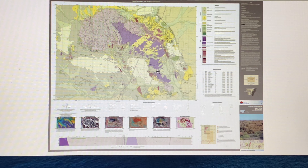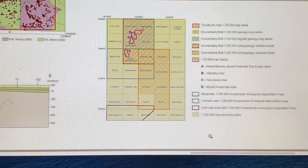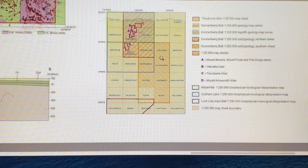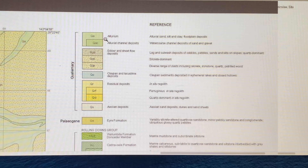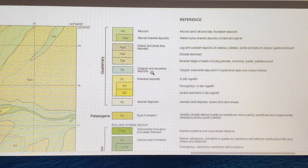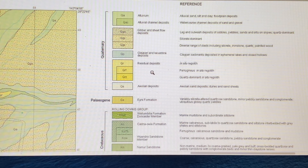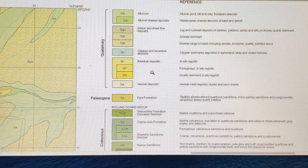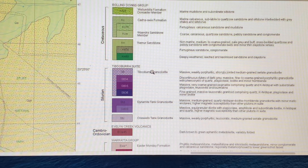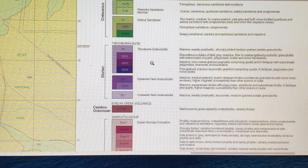Without having to pay a fee, you can actually download that and have a look around yourself. It will also give you a list of the other map sheets that are available around the area that you have selected. You'll notice on the map there is a color scheme for the legend showing what minerals and what type of geological rocks are around the area.